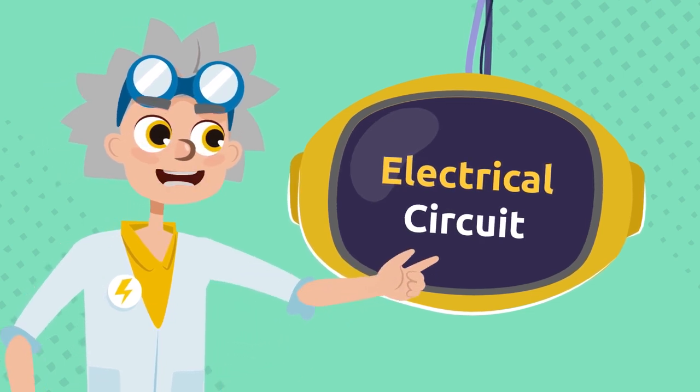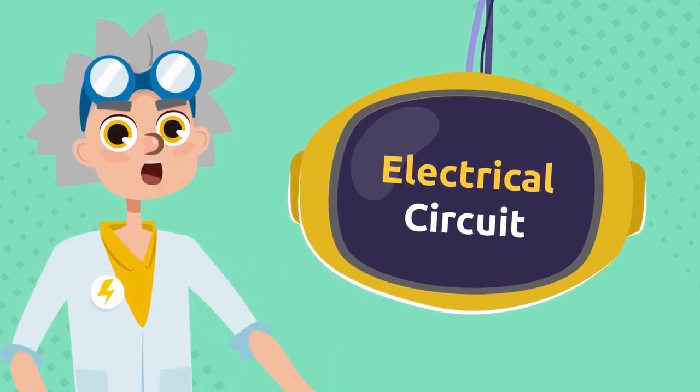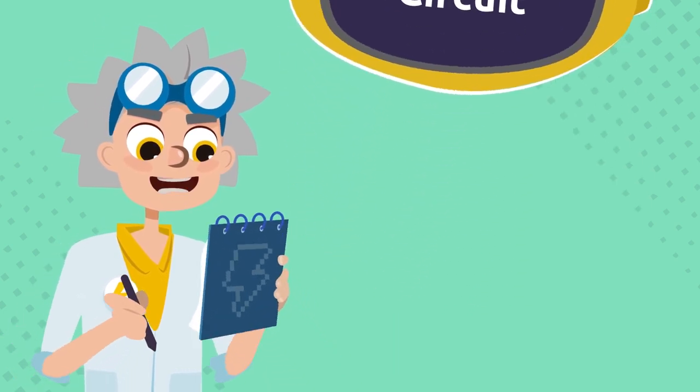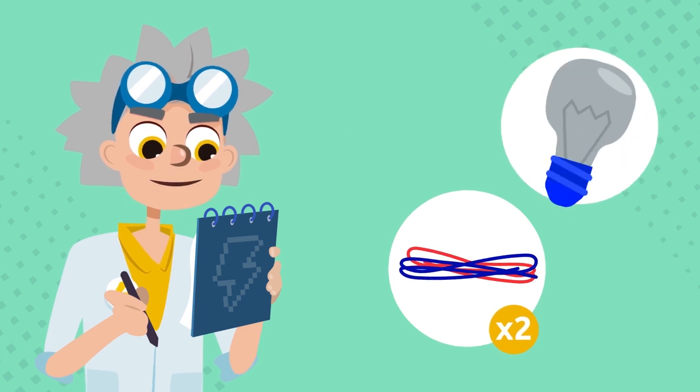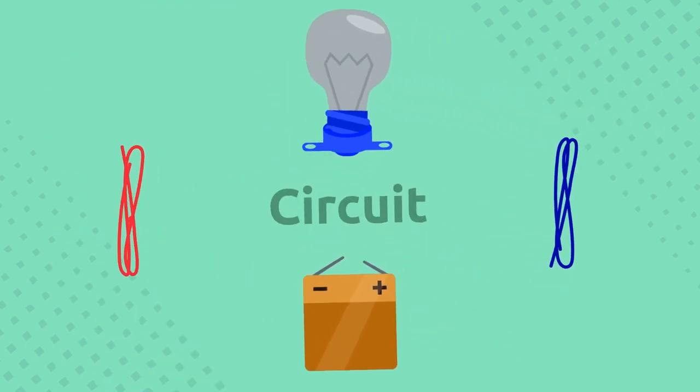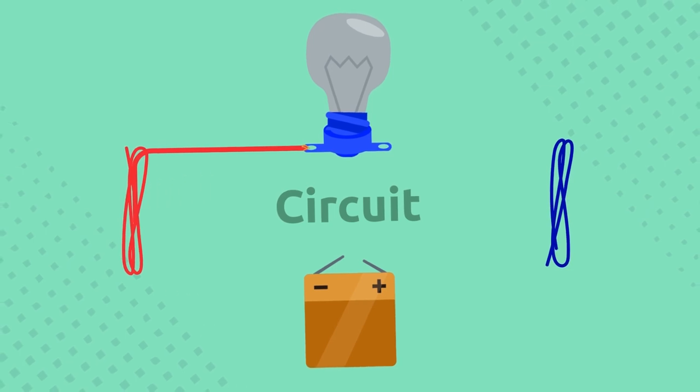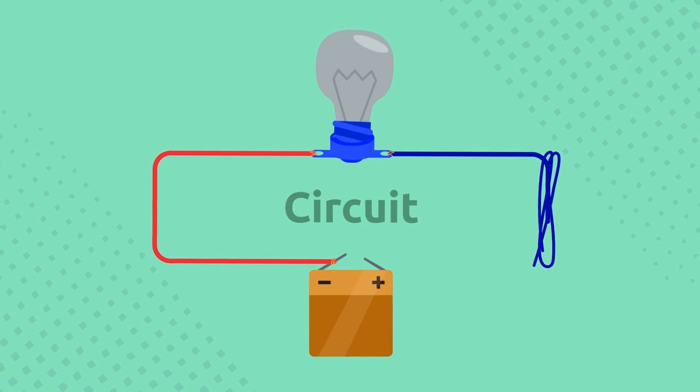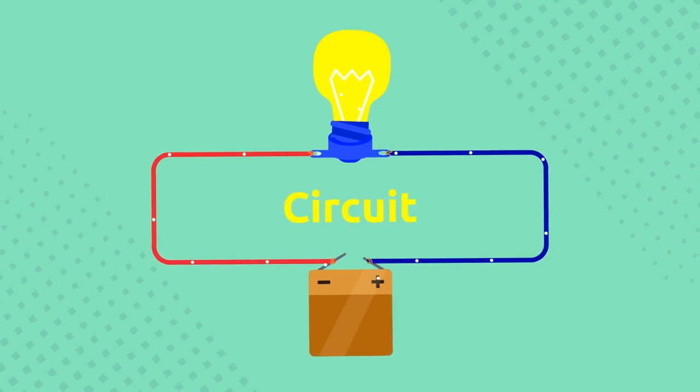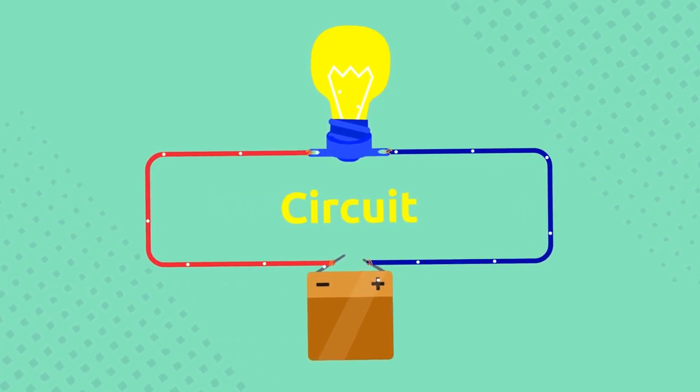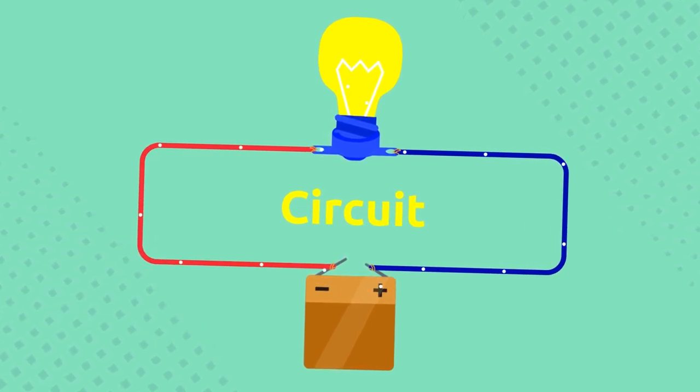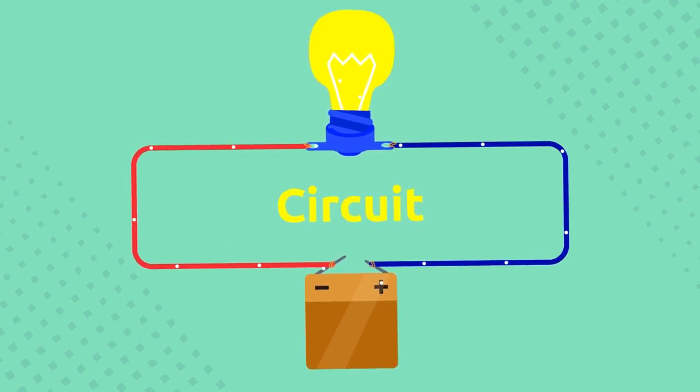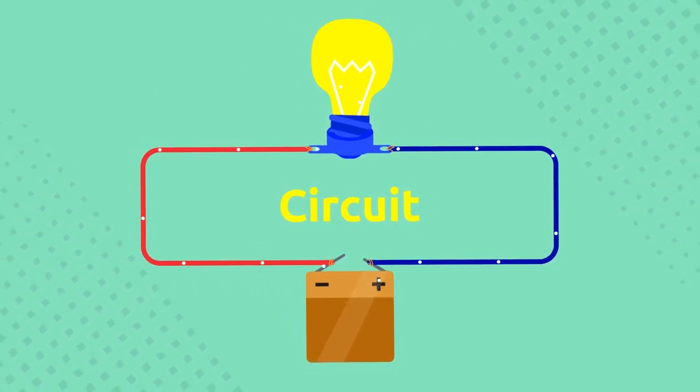We will start by building an electrical circuit, which as you know is a closed path that electric charges flow through. I will need two wires, a light bulb, and a battery. We will attach one end of the wire to the light bulb and the other to one of the battery's ends. I'll repeat the same steps with the other wire. And voila! We've just created an electrical circuit. The electric charges flow from the battery to the light bulb through the wires and as a result, the light bulb lights up. Isn't it impressive?